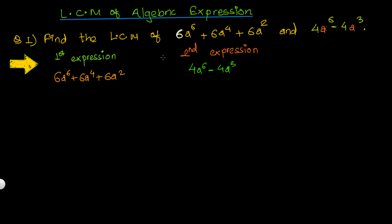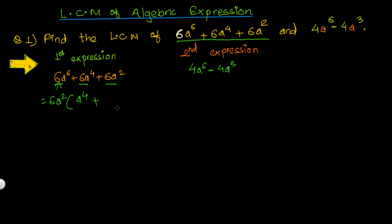Now we look at a relatively tougher problem. The first expression is 6a⁶ + 6a⁴ + 6a². When you see common terms inside an expression, you should always factor them out. For this expression, 6a² is common. Dividing each term by 6a² gives a⁴ + a² + 1 inside the bracket.